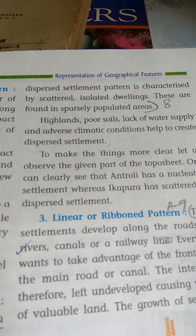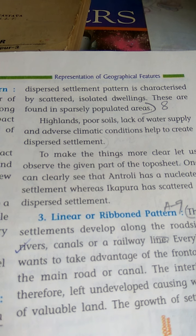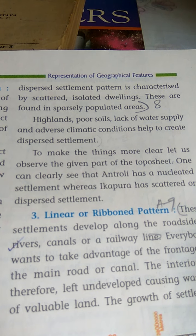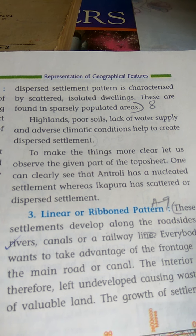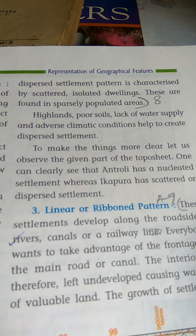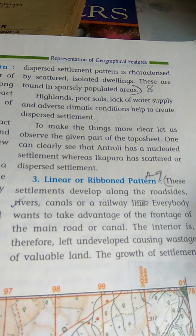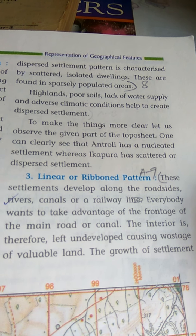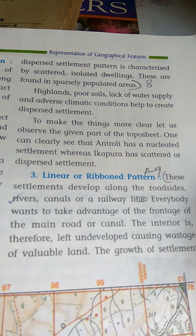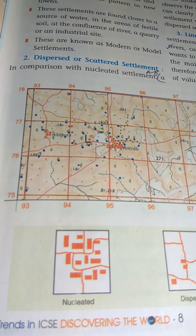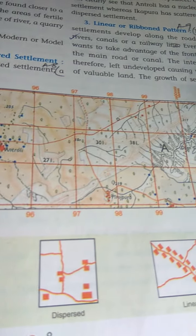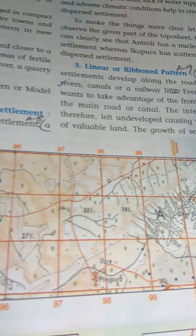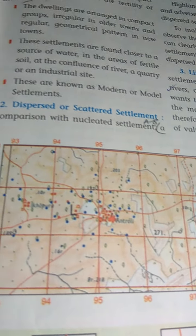Next is dispersed settlement. In comparison with nucleated settlement, a dispersed settlement pattern is characterized by scattered or isolated dwellings. These are found in sparsely populated areas. Third is linear settlement — these settlements develop along roadsides, rivers, canals, or railway lines. A diagram is provided showing these on a topo sheet, including spurs and nucleated areas.